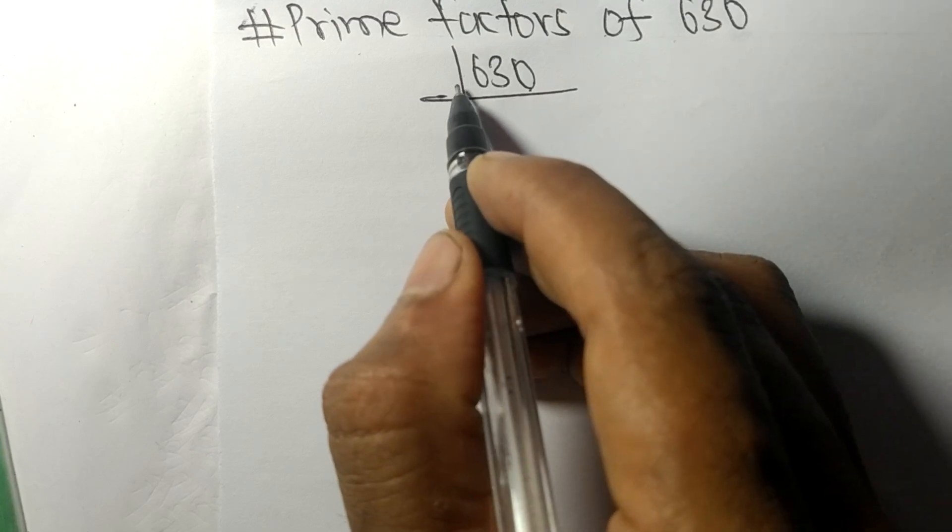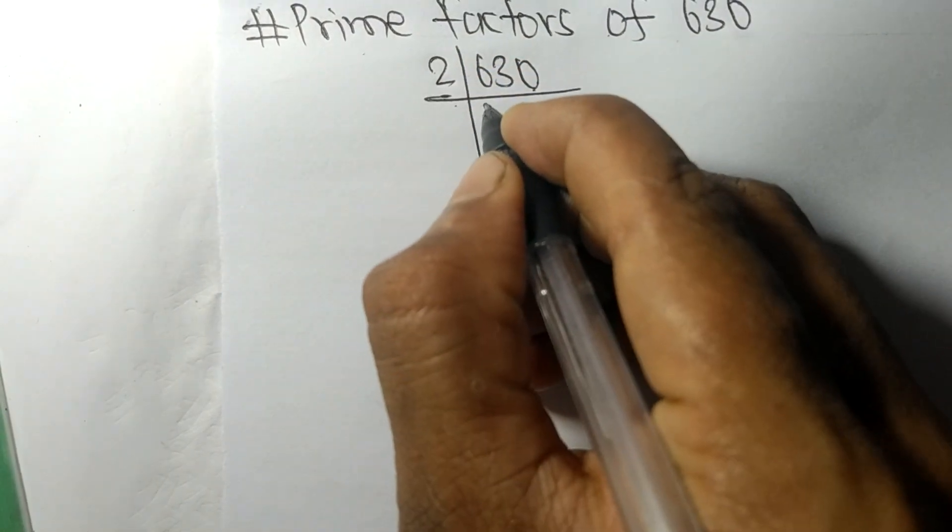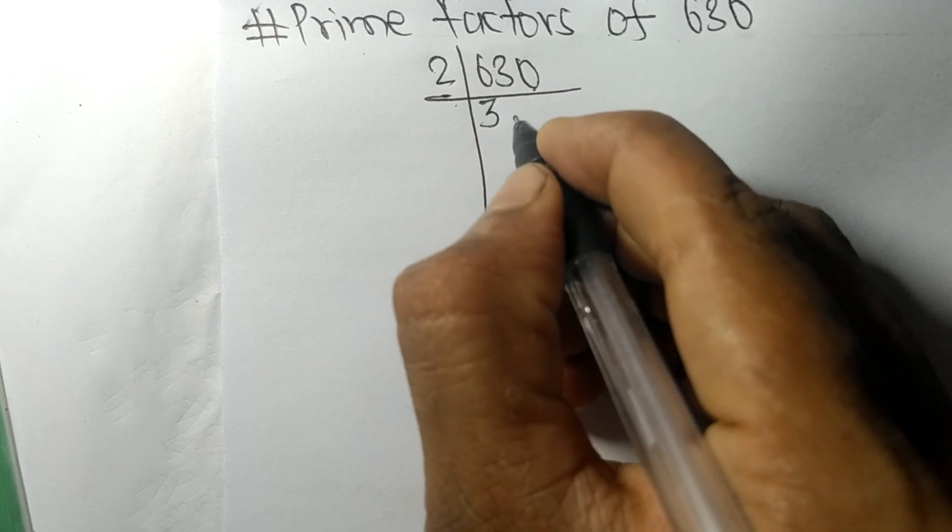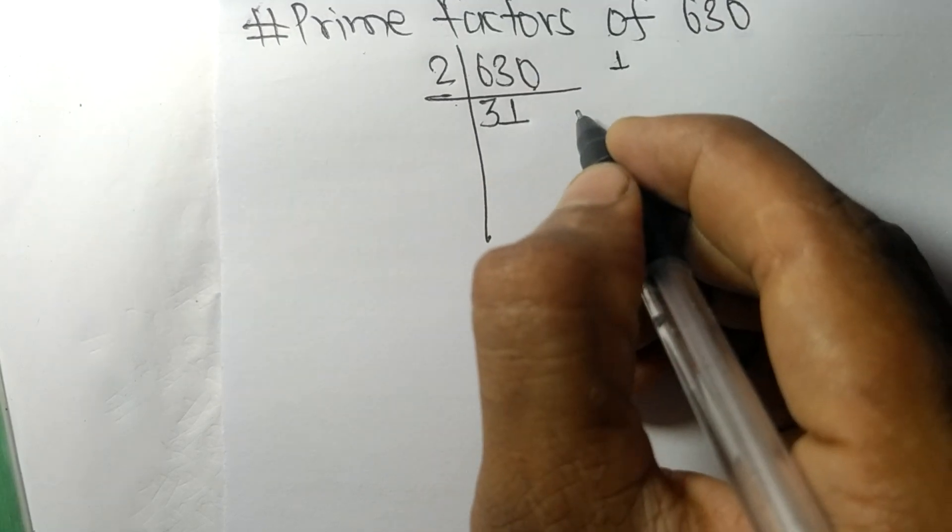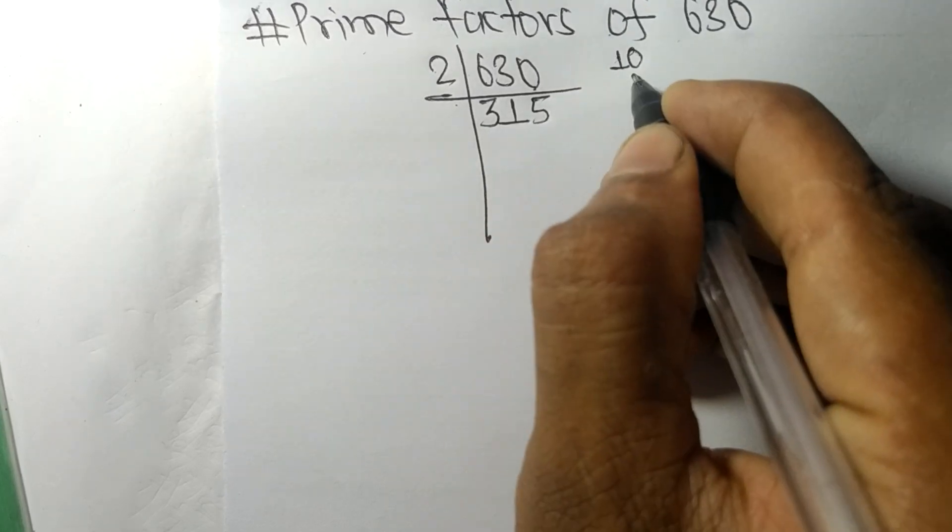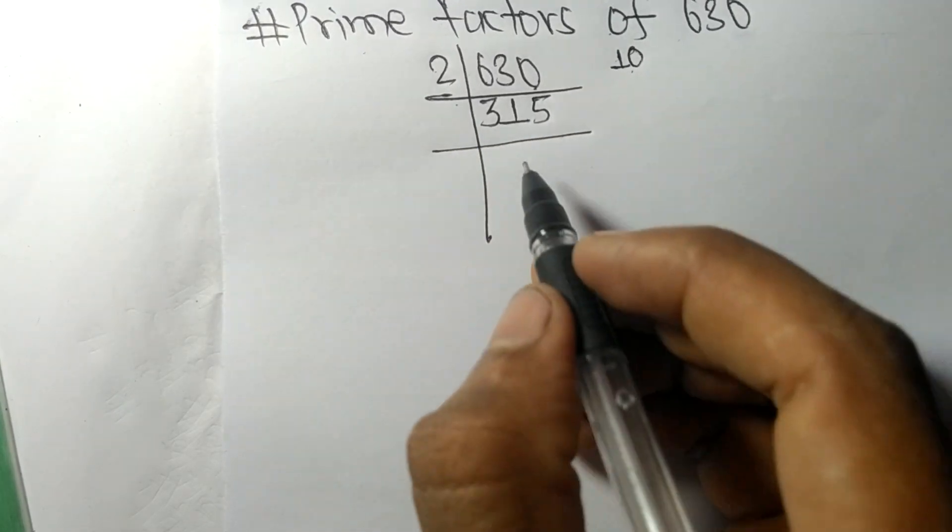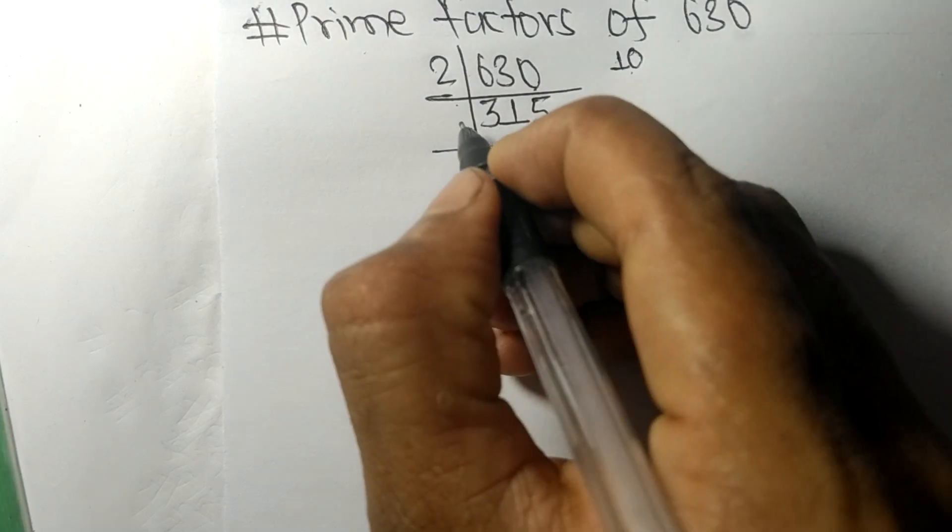2 times 3 means 6, 2 times 1 means 2, remainder 1. And this 0: 10, 2 times 5 means 10. So now we got here 315, which is exactly divisible by 3.